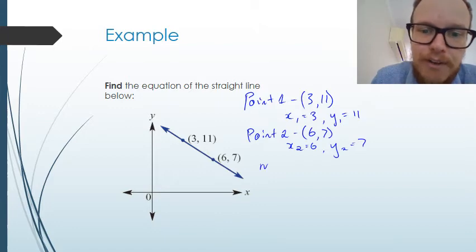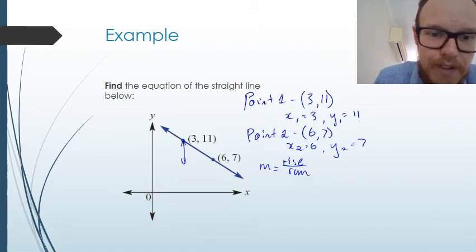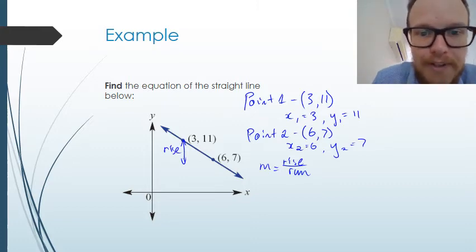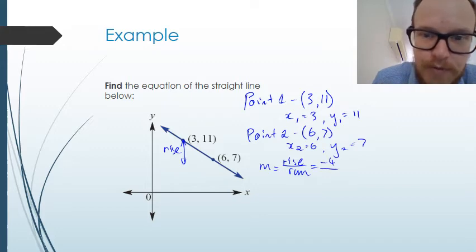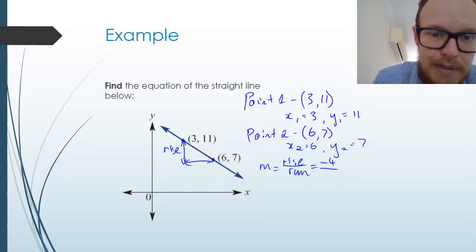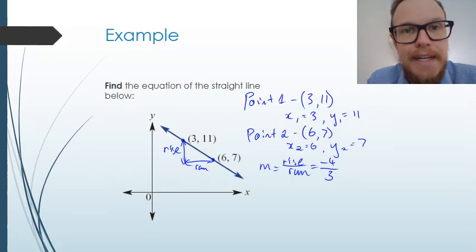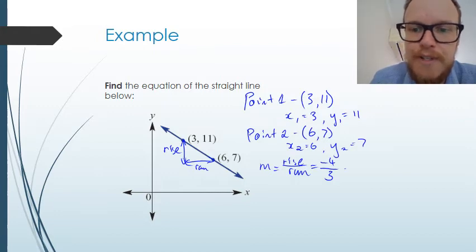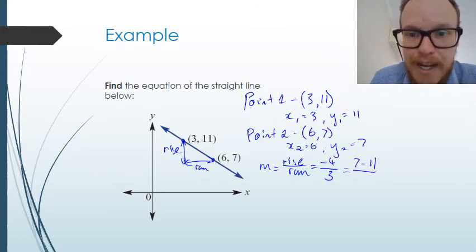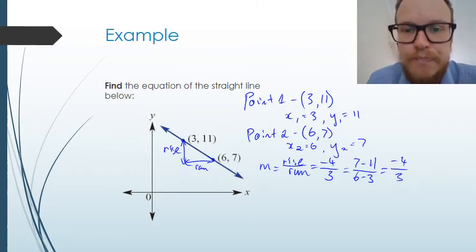So we can find the gradient. The gradient is rise over run. So the rise, we've gone down. This is our rise. We've gone down by 4, from 11 to 7. This is going to be down by 4. And the run, how far we've gone across, is going to be 6 minus 3, which is 3. So our gradient is negative 4 over 3. We can't simplify that. You could put it as a decimal if you wanted to, but it probably wouldn't work very well as a decimal because it wouldn't be as accurate because it's going to be in thirds. So probably keep it as a fraction. So negative 4 over 3. I can substitute in values if I want and say, well, I'm going to do y2 minus y1, 7 minus 11 over x2 minus x1, which is 6 minus 3. And I'll get the same answer. So 7 minus 11 is negative 4 and 6 minus 3 is 3. It's the same answer that I get there.